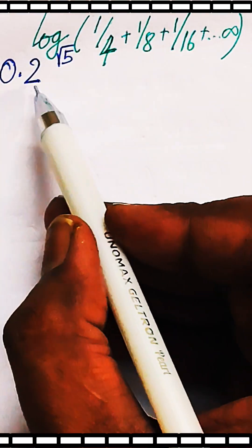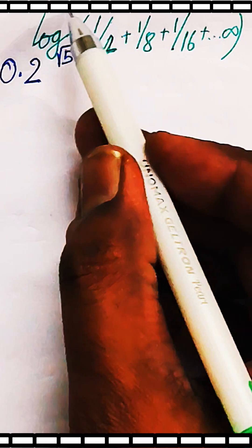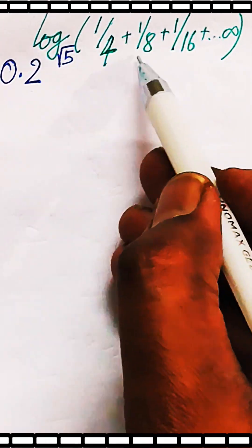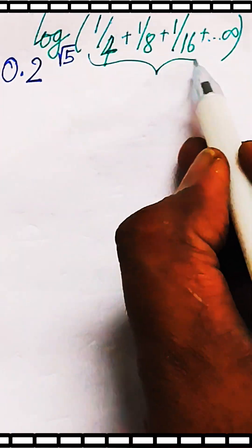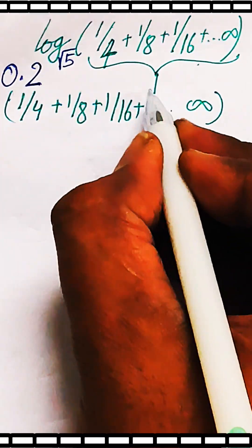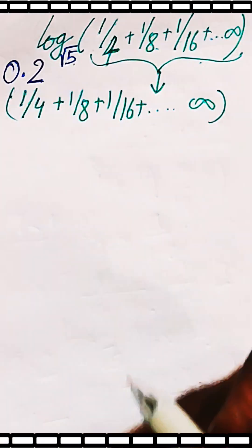Let us solve this question today. We have 0.2 as the base with an exponent containing a log. The log is with base root 5, and a series is given. We need to find the log of this series with base root 5.